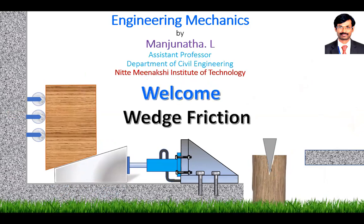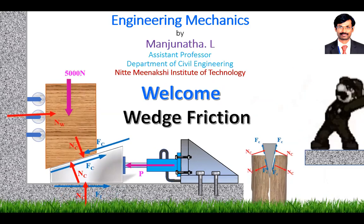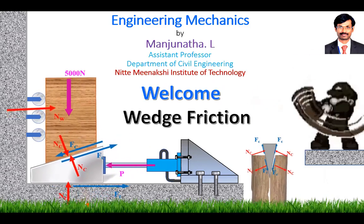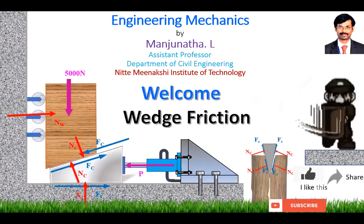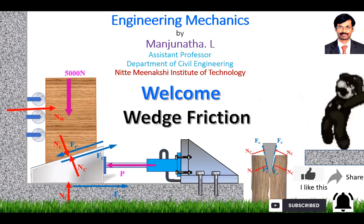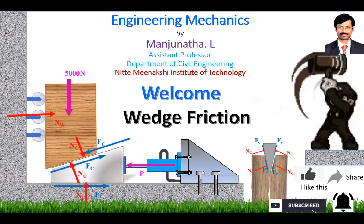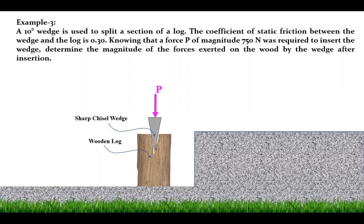Welcome everyone to today's session on wedge friction. Example number three: a 10-degree wedge is used to split a section of a log. The coefficient of static friction between the wedge and the log is 0.3. A force P of magnitude 750 newtons was required to insert the wedge. Determine the magnitude of the forces exerted on the wood by the wedge after insertion.